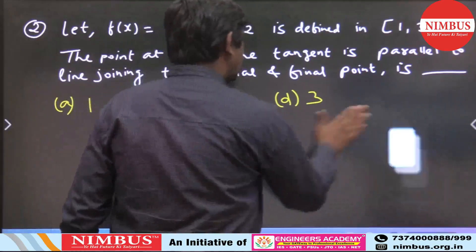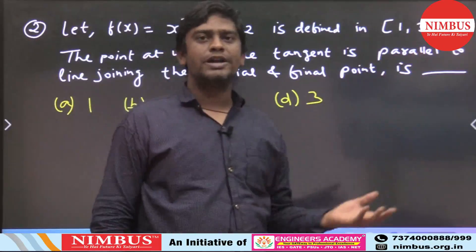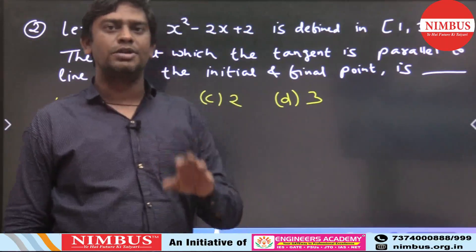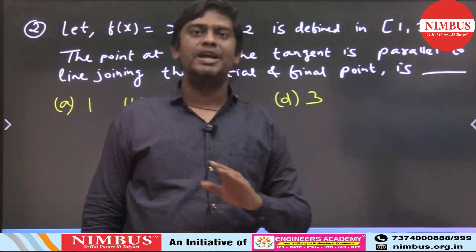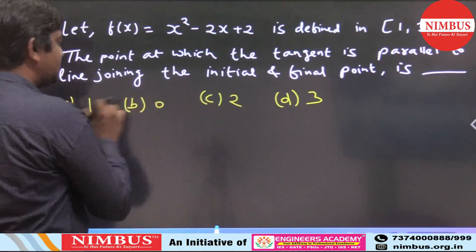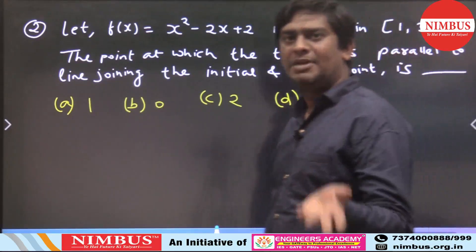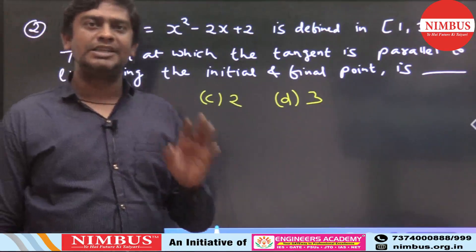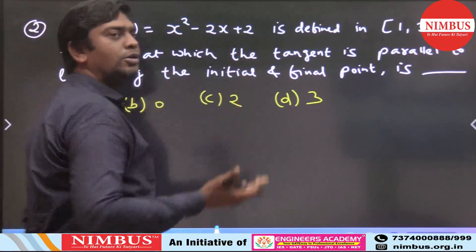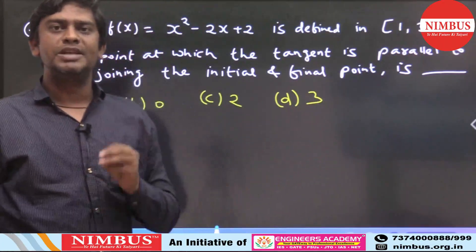Let me apply the theorem. Before applying the theorem, the most important thing is the function should be continuous and differentiable in the given interval. Look at this — if neither 'mean value theorem is not applicable' nor 'none of these' is written as an option, then the theorem is 100% applicable. No need to waste time checking continuity and differentiability. This is an algebraic polynomial function, so it is continuous and differentiable, meaning the Mean Value Theorem is applicable.